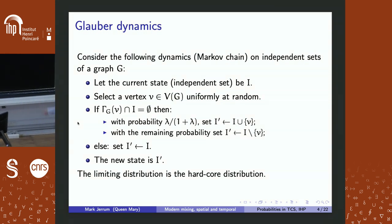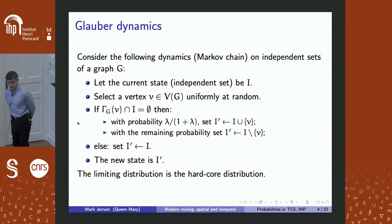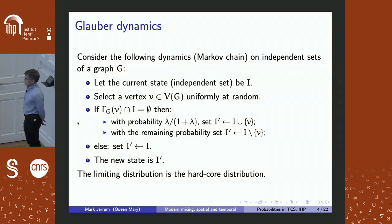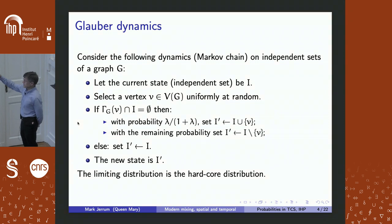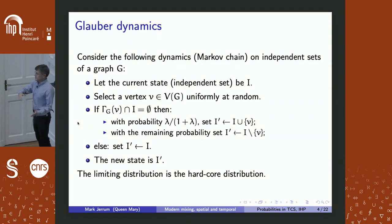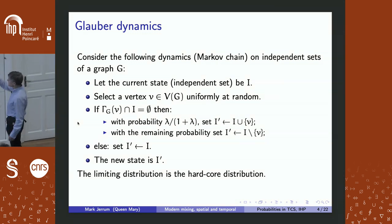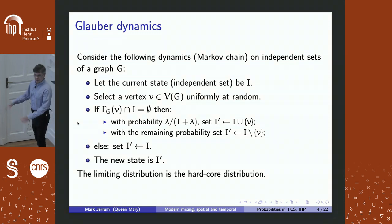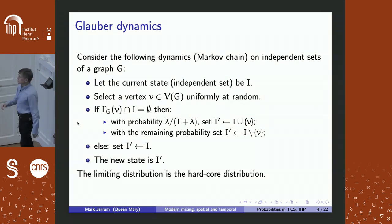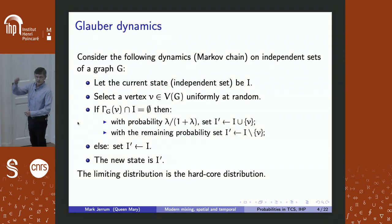This situation is a lot easier than what we've seen so far — independent sets are simple objects compared with complex vision examples. That means we'll have to do better and get more precise results. So what is a Markov chain that converges to the hardcore distribution on independent sets? It's called Glauber dynamics, which means random single-site updates.